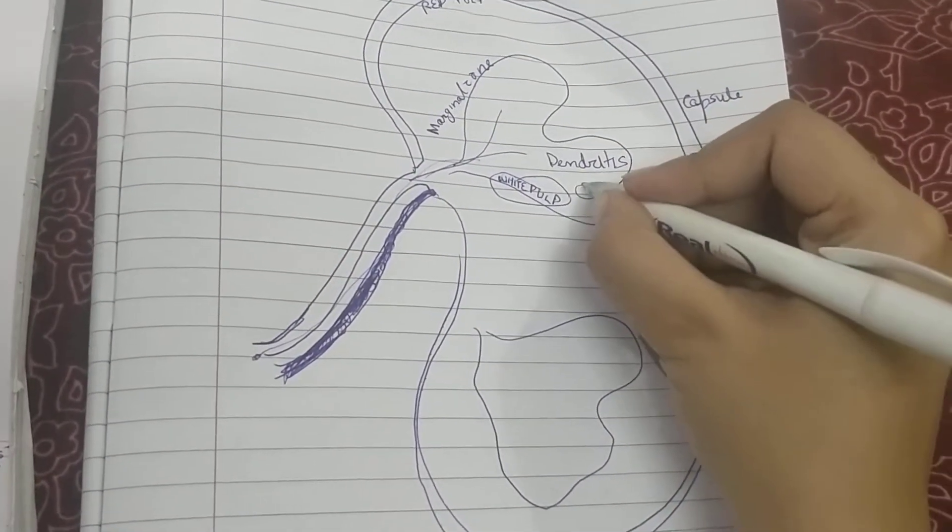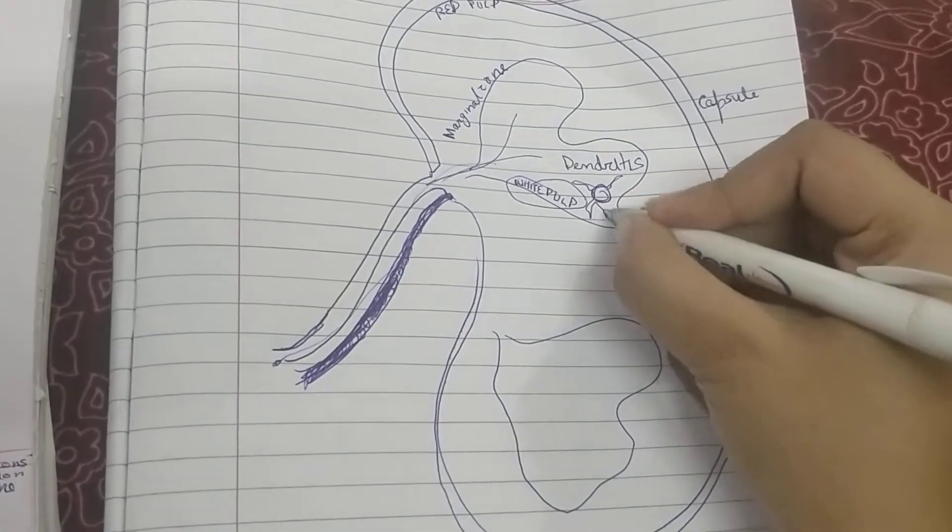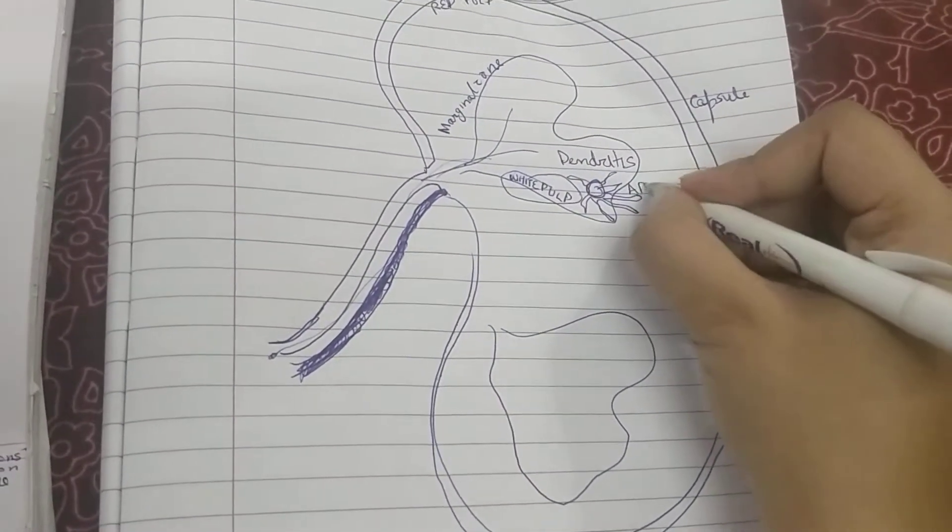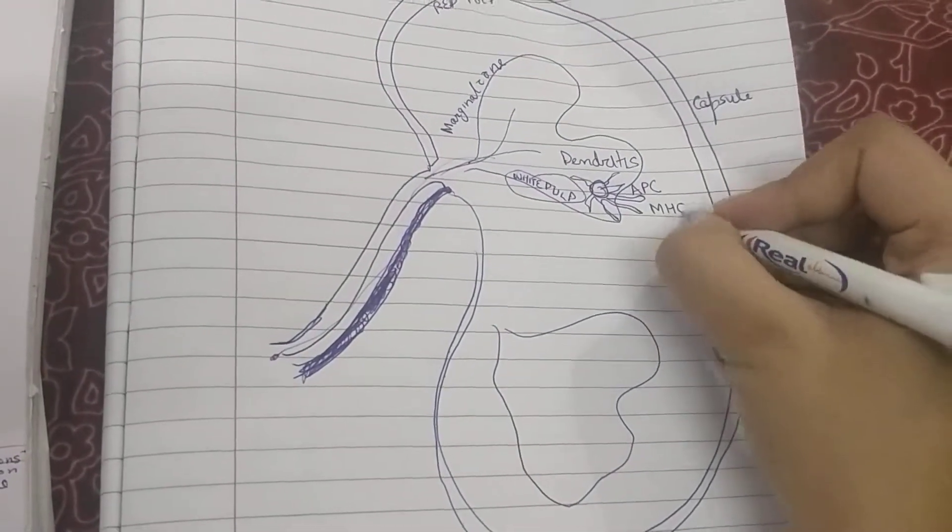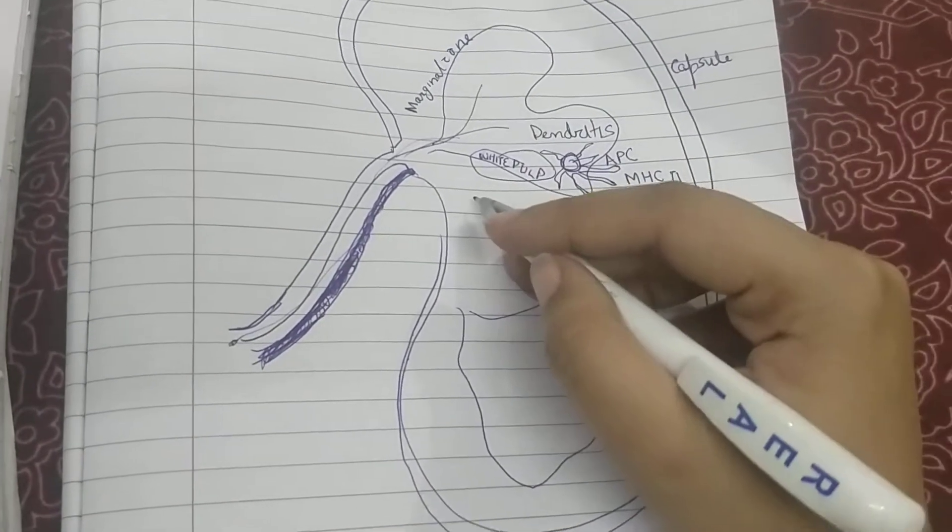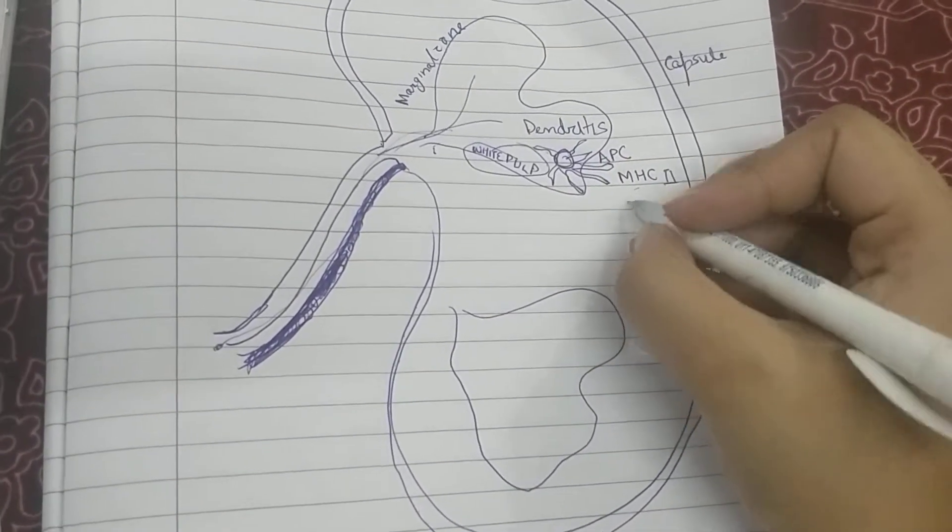Dendritic cells are cells which have many dendrites and are a special kind of APCs—antigen presenting cells—which have MHC2. These MHC2 bind to the antigen that has come from the splenic artery and they activate the TH cells.